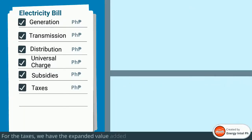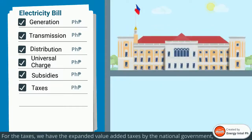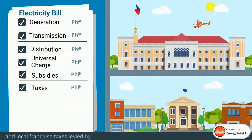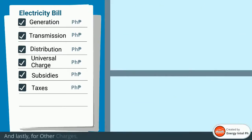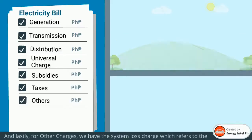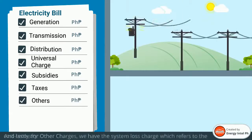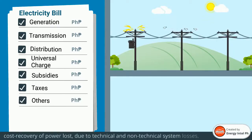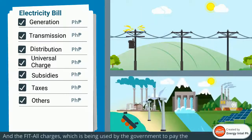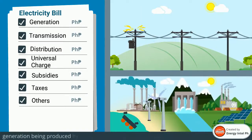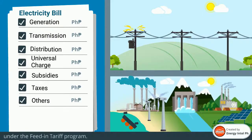For taxes, we have the expanded value added taxes by the national government, and local franchise taxes levied by LGUs. And lastly, for other charges, we have the system loss charge, which refers to the cost recovery of power loss due to technical and non-technical system losses, and the FIT-All charges, which is being used by the government to pay the generation being produced by certain renewable energy generators under the feed-in tariff program.